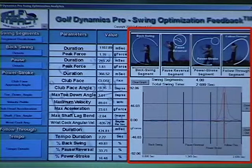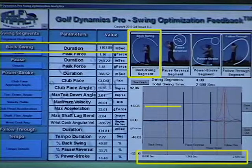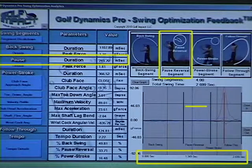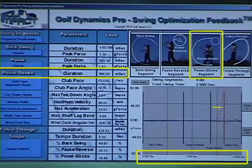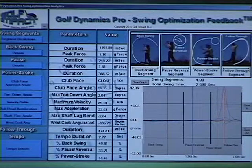The initial graph that appears automatically after the swing is captured is the entire swing, showing the time duration of each of the four swing segments. Looking at the timeline, the total swing took 2.7 seconds, with the backswing taking 1.1 seconds, pause and reversal taking 0.749 seconds (or 749 milliseconds), the power stroke taking 366 milliseconds, and the follow-through taking 474 milliseconds. The red line represents where maximum velocity occurred.